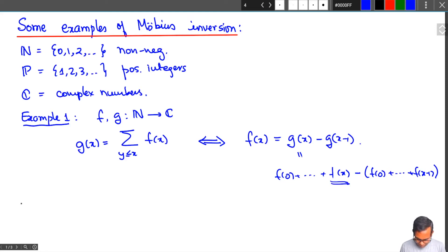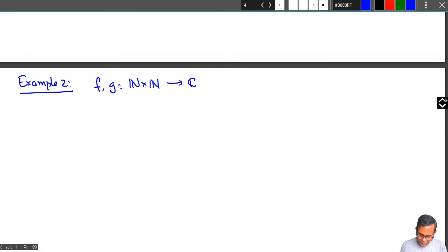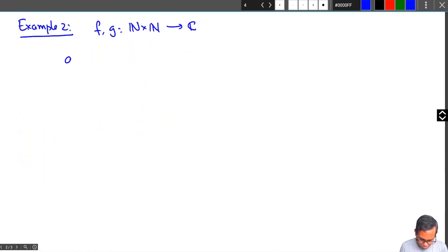Let's look at a slightly more complicated example. Example 2. Let's take f and g to be now functions on N × N, the Cartesian square of N to the complex numbers. You can think of this as ordered pairs of non-negative integers. And as before suppose we have a relationship of the form g(x₁, x₂) = summation y₁ ≤ x₁, y₂ ≤ x₂ f(y₁, y₂).